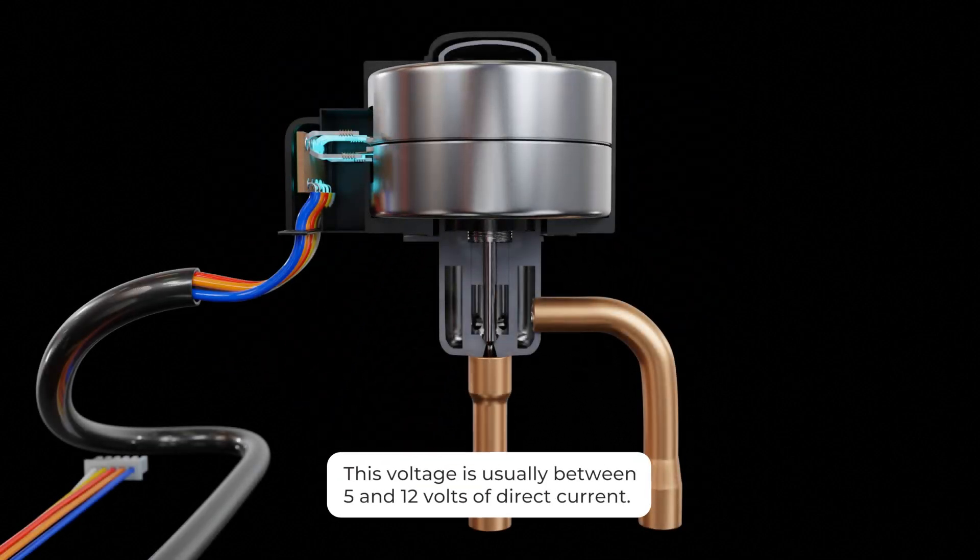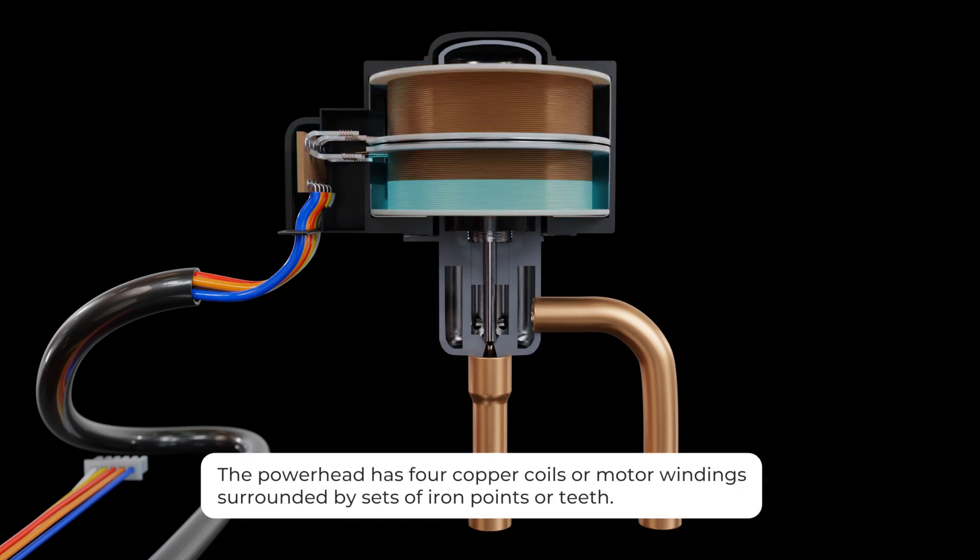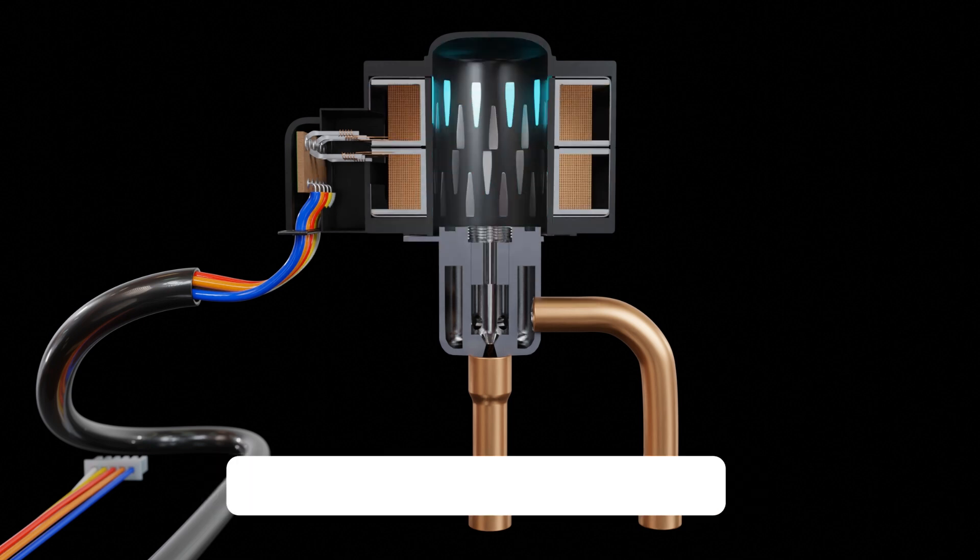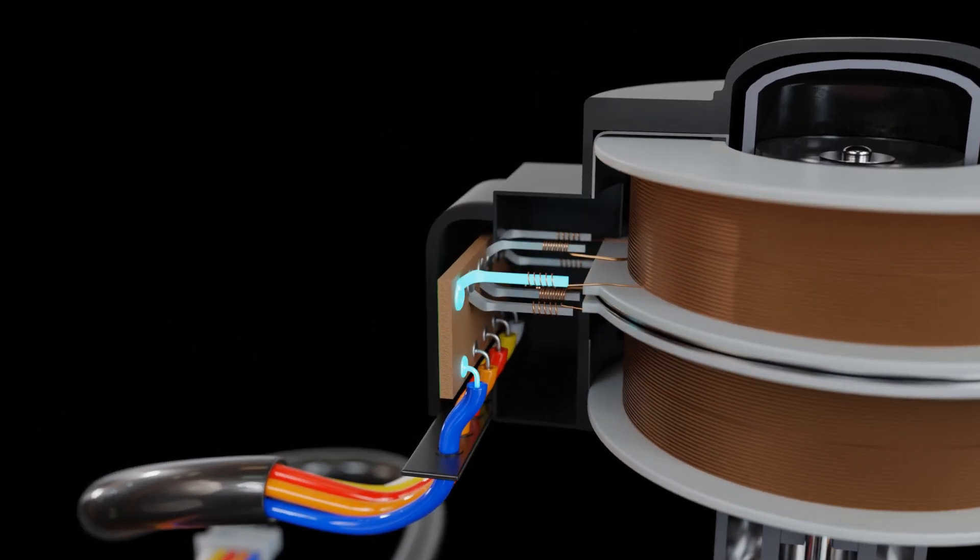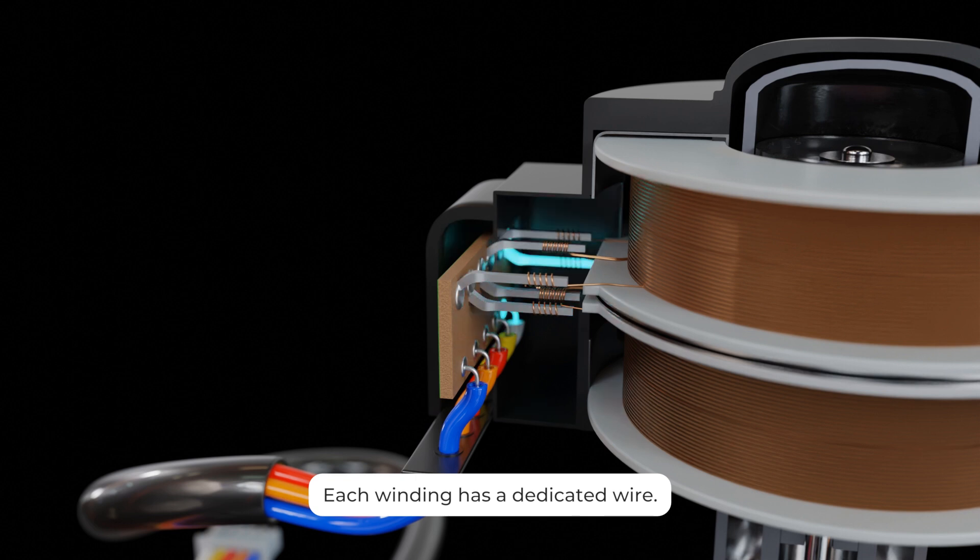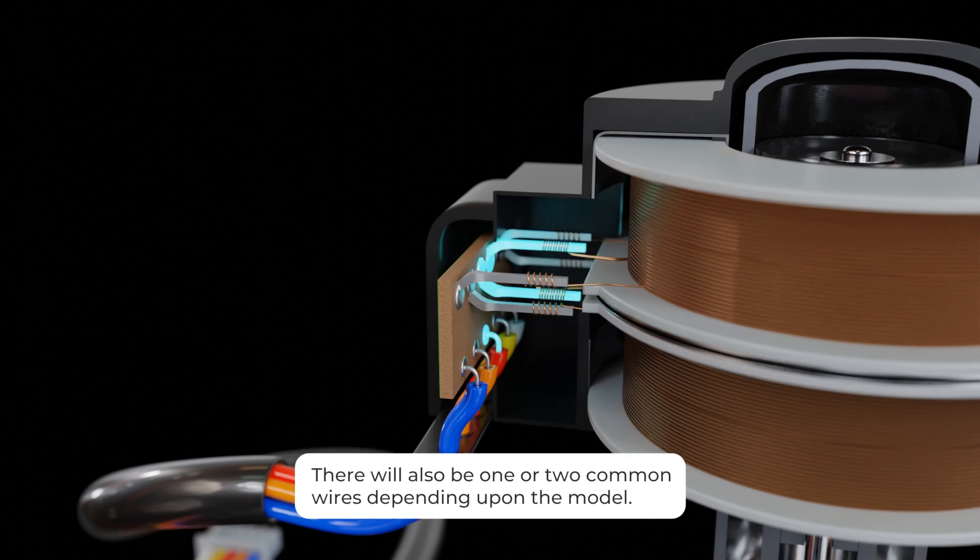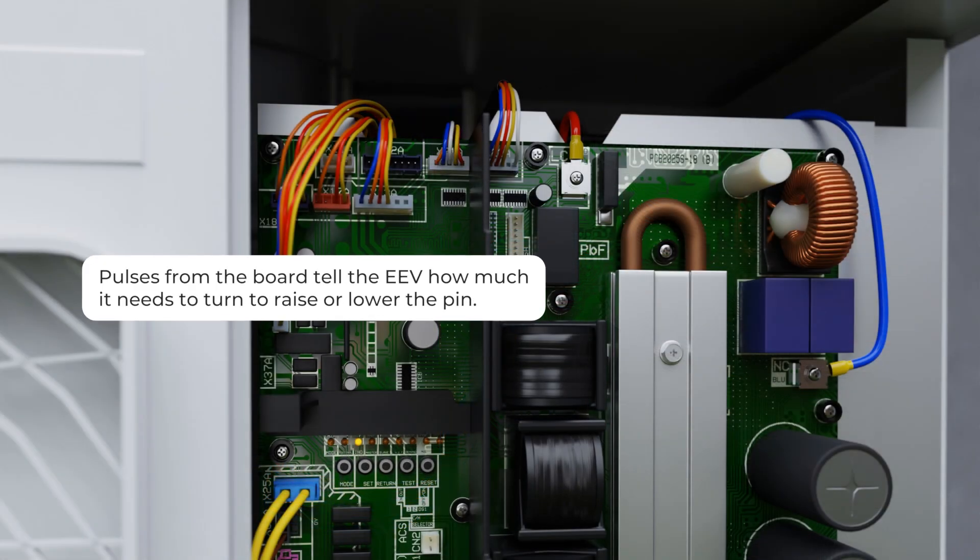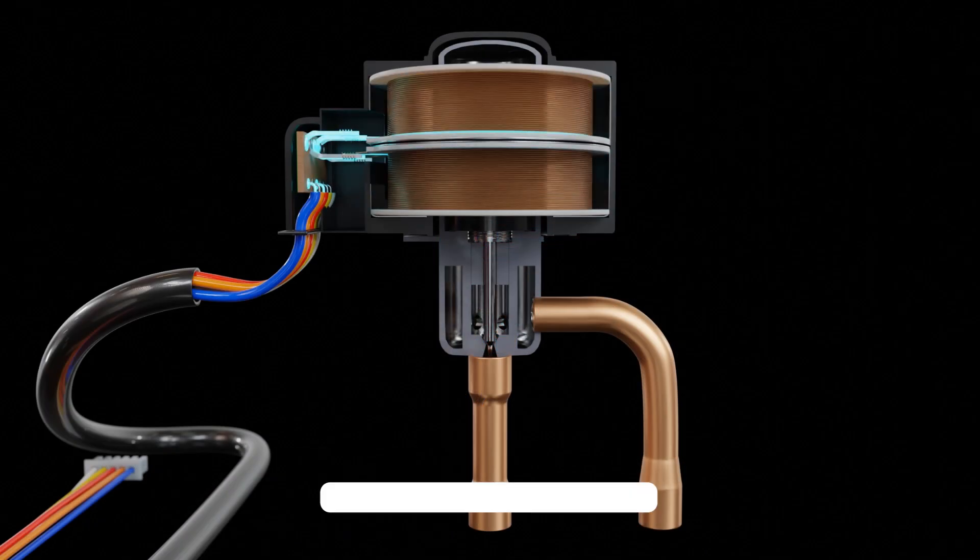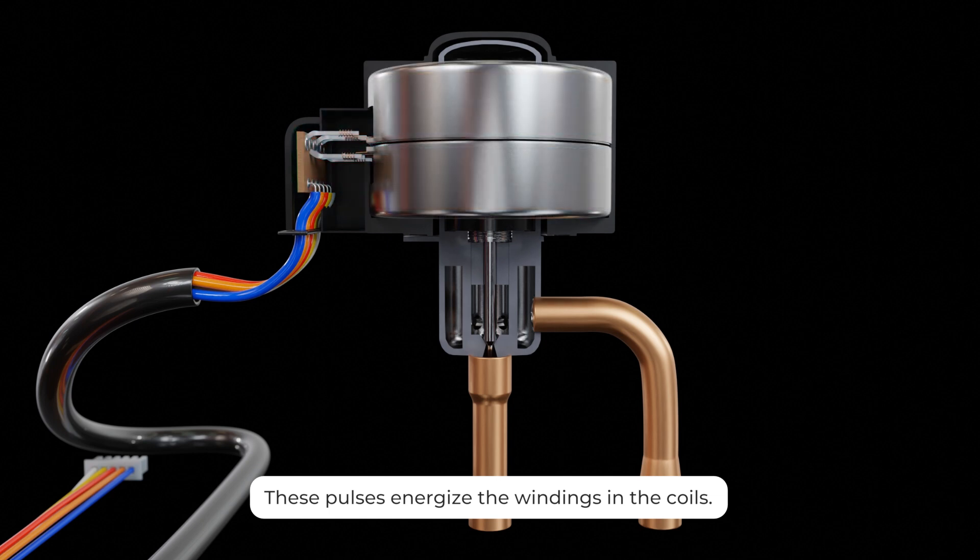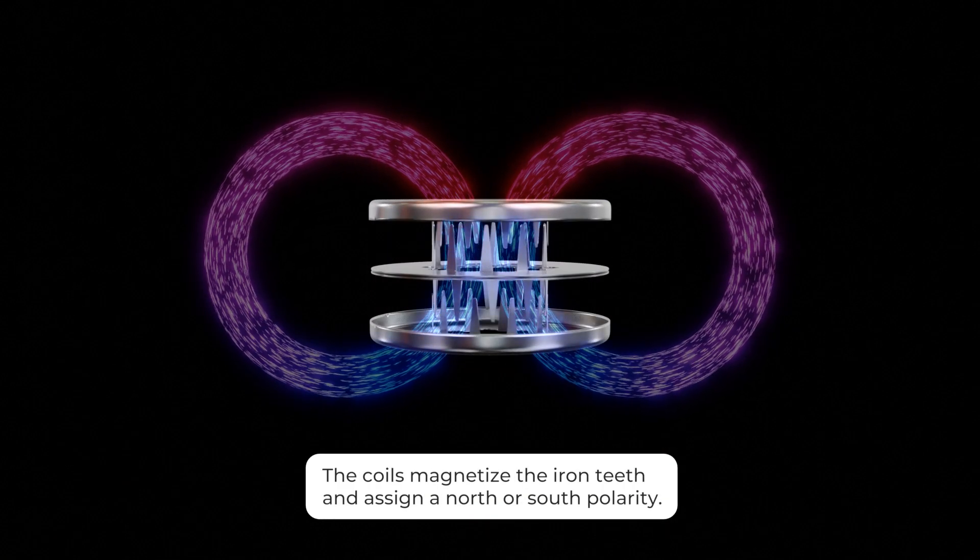This voltage varies by manufacturer but is usually between 5 and 12 volts of direct current. The power head has four copper coils or motor windings surrounded by sets of iron points or teeth which concentrate the magnetism in specific areas that allow the motor to turn with precision. Each winding has a dedicated wire. There will also be one or two common wires depending upon the model.